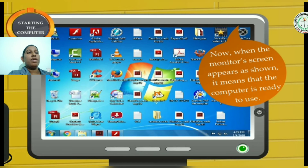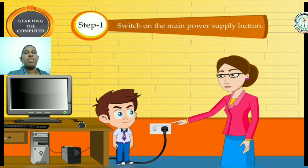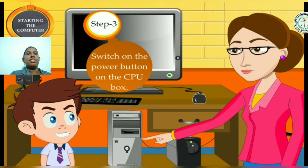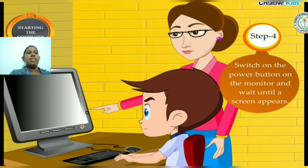Let us revise the steps for starting the computer. Step one: switch on the main power supply button. Step two: switch on the power button on the UPS. Step three: switch on the power button on the CPU box. After that, switch on the power button on the monitor and wait until the screen appears.